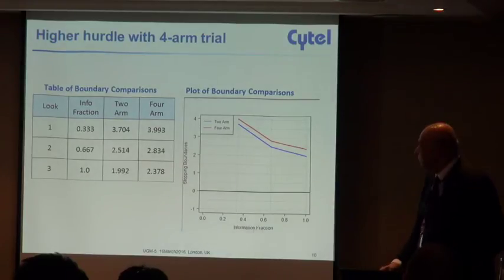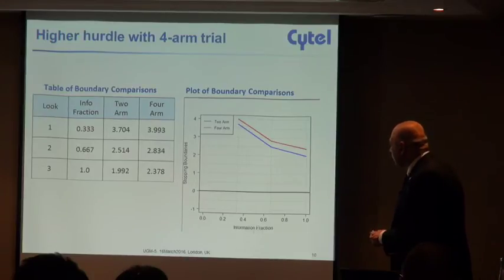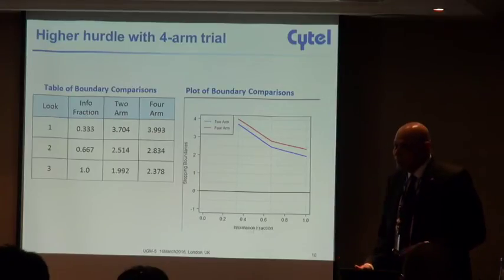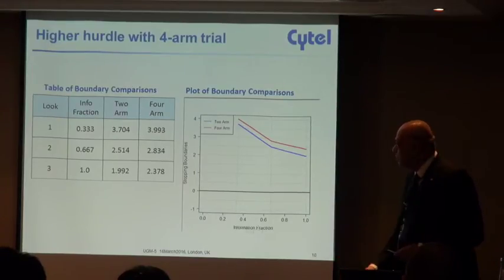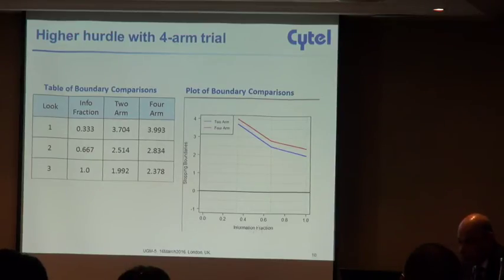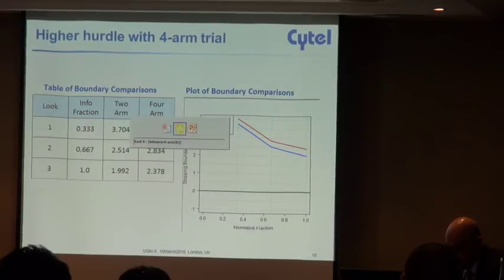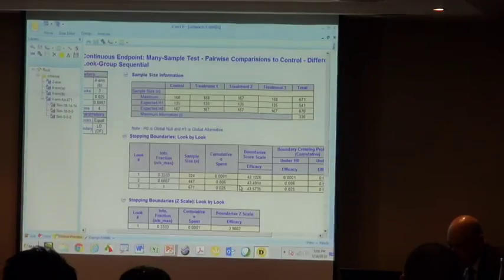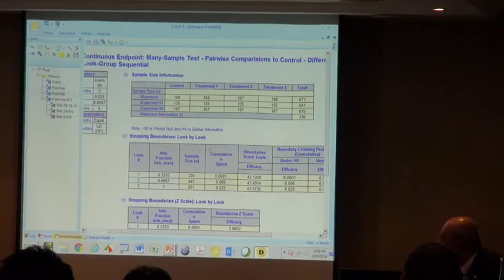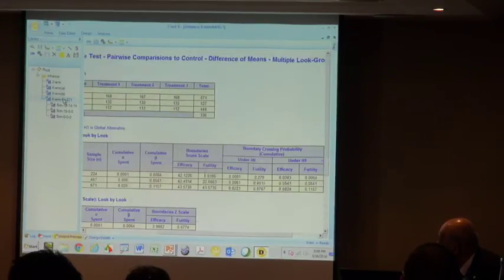Now the next thing that you want to do is see what about if I introduce a futility boundary in here? I want to stop early if all the arms cross and I want to drop the losers. That's where the computations can get quite difficult when you have both an efficacy and a futility boundary. I'm going to do this design with 671 patients but I'm going to do it with the presence of a futility boundary thrown in.